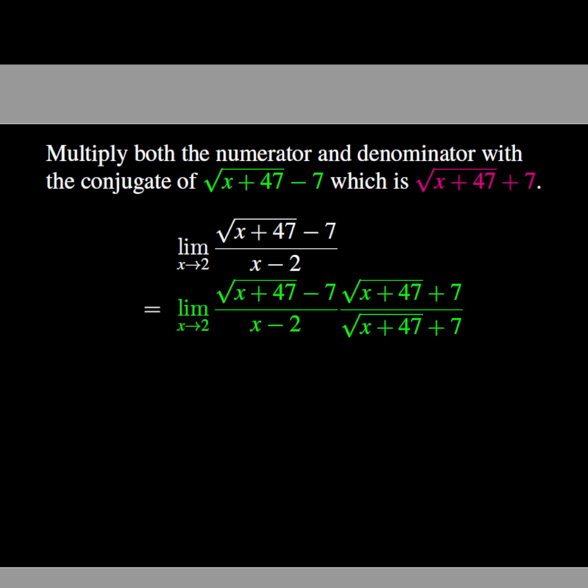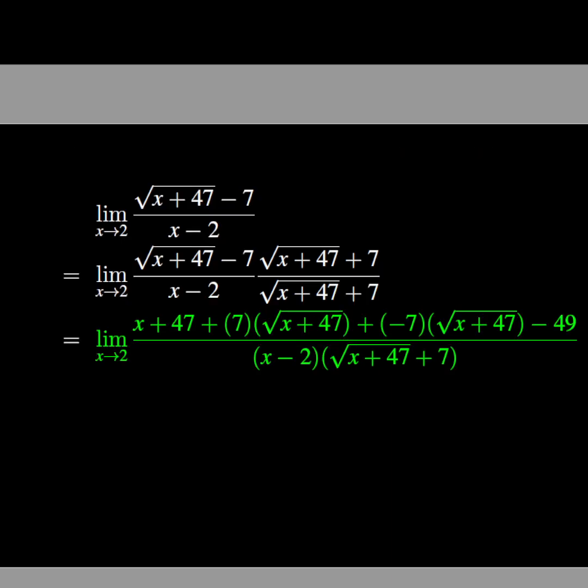The conjugate is √(x+47) + 7. We multiply by this conjugate and then expand the numerator using properties of square roots.